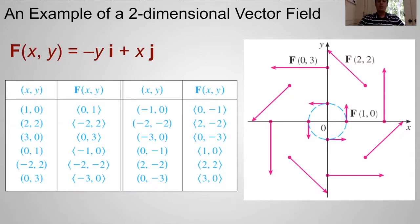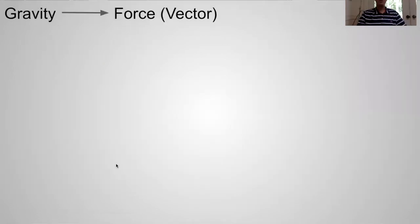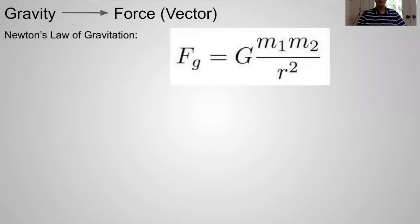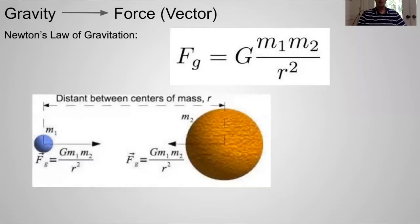Now let's apply this to the gravitational vector field. We know Newton's law of gravitation, where r is a distance between two objects with masses of m1 and m2, and G is a gravitational constant. If we can write this in the vector field form, then we will be able to picture gravity.